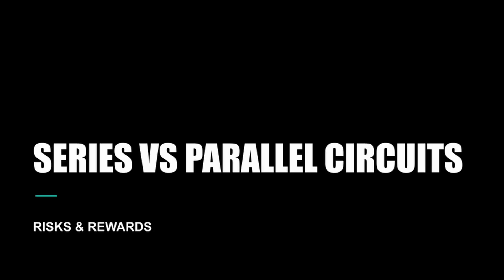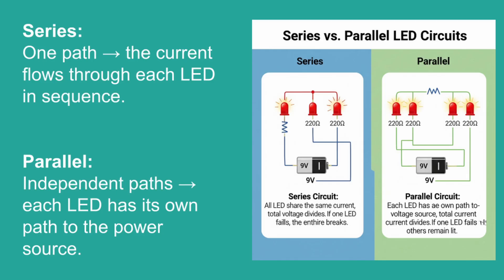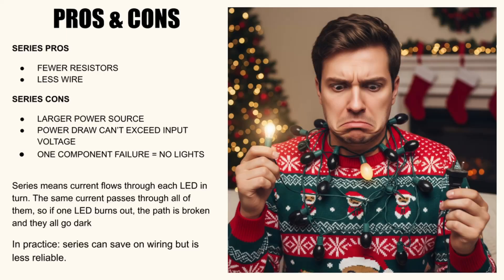Now, let's talk wiring. You've got a couple options. Series means the current flows through each LED in sequence. Parallel means each LED has its own path to the power source. Let's talk pros and cons for series. Fewer resistors, less wire. Cons, however. You need a larger power source. Your power draw across the circuit can't exceed the input voltage. If one component fails, they all fail.